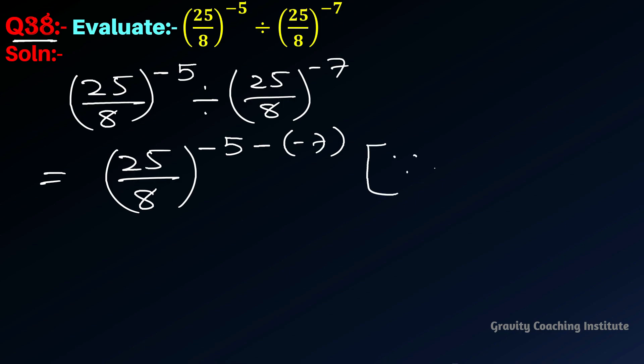According to the law of exponents, a^m divided by a^n equals a^(m-n).